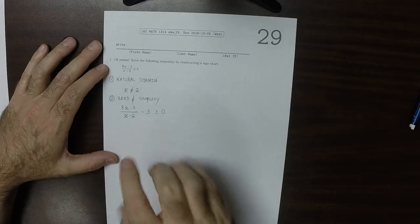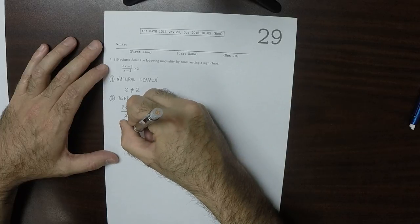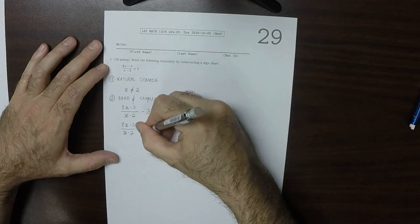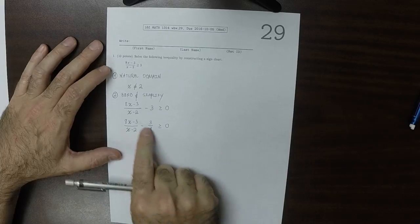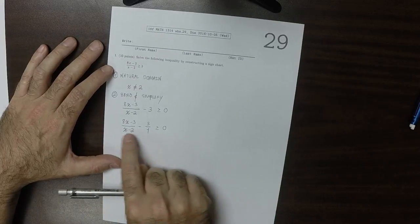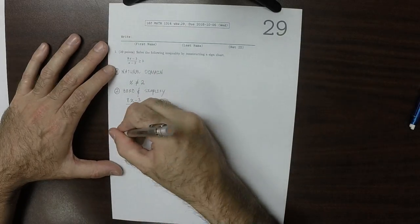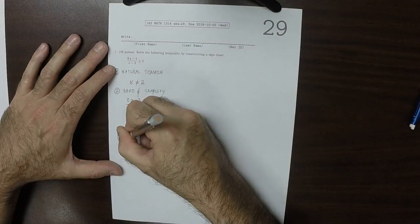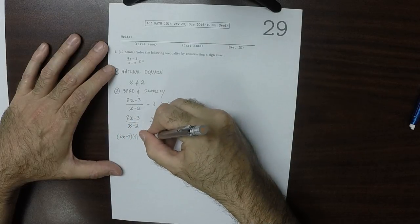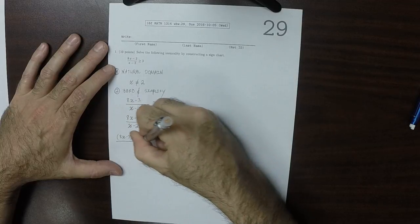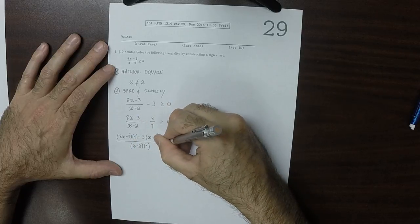And the way I'll do it is I'll do the cross-multiply thing. I'll say that this is 8x minus 3 over x minus 2 and then minus 3 over 1 greater or equal to 0. So I'm going to do the cross-multiply thing, or if you like, finding the common denominator. So then this would be 8x minus 3 times 1 and then minus 3 times x minus 2, and then this is all over x minus 2 times 1, greater or equal to 0.